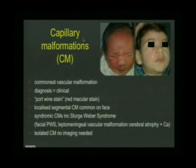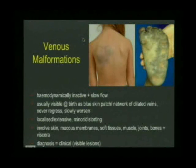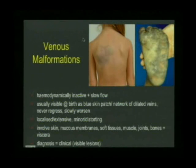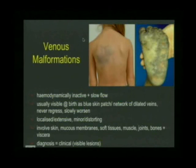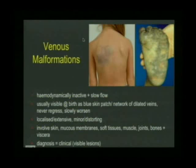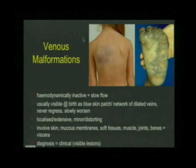Moving to the next group - the commonest malformations seen in a large vascular anomalies clinic, and the commonest type coming to the radiologist for interventional radiology treatment. One important thing I forgot to mention about hemangiomas: we often see reports of intramuscular lesions labelled as hemangiomas. In children, hemangiomas do not occur in muscle at all - they occur in fascial planes, not within muscle tissue itself. So if we see a muscle-based lesion in a child, it's much more likely to be a venous malformation.